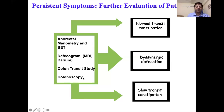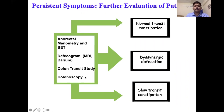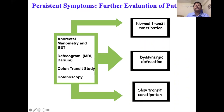Colonoscopy appears intuitively important, but in most patients with constipation it is normal. We still do it in patients with persistent symptoms to exclude obstructive pathology. Once colonoscopy is done, we first assess for dyssynergia, which is more common than slow transit. If manometry and defecogram are normal, only then do we proceed to a transit study to look for slow transit constipation.